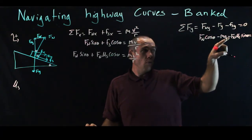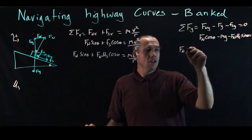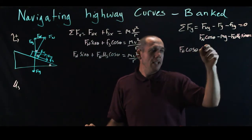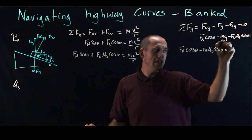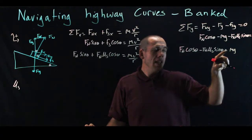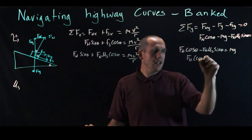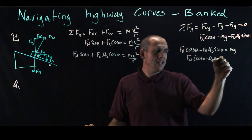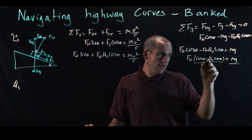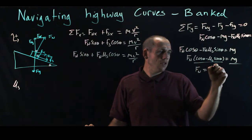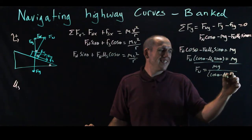So now I'm going to solve this for F_n, which means I need to collect my like terms. So I'm going to rewrite this F_n cosine theta minus F_n mu S sine theta equals mg. I added mg over to the other side, and so now I'm going to factor out this F_n, so the normal force times cosine theta minus mu S sine theta equals mg. And now I can divide both sides by that difference. So I have F_n is equal to mg divided by the cosine of theta minus mu S sine theta.